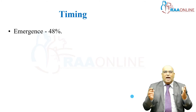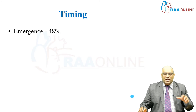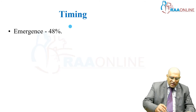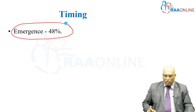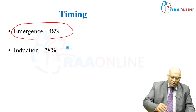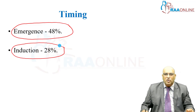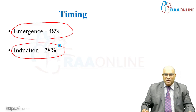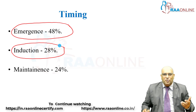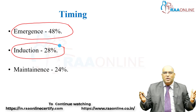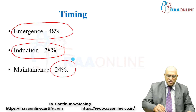Coming to the timing of laryngospasm: it usually happens at the emergence period with an incidence of around 48 percent, or during induction and intubation where the incidence is around 24 percent. During maintenance, it can account for 24 percent of cases, where stimulation or light planes of anesthesia can be the cause.